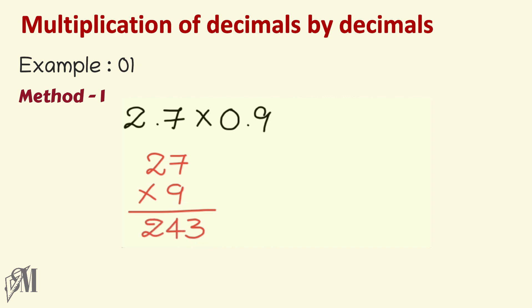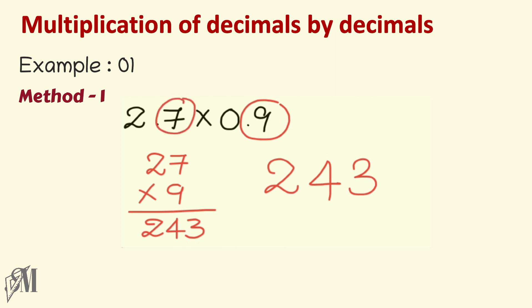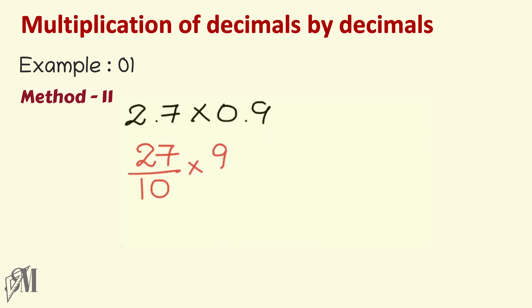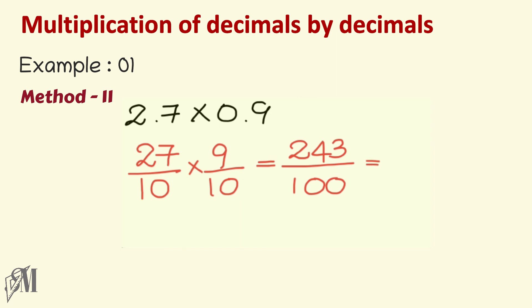243 is not the final answer. Going back to the sum, there are two digits after the decimal points in total — 7 and 9 — so the answer must have two decimal places, giving 2.43. In the second method, we write 2.7 as 27 over 10 and 0.9 as 9 over 10. Multiplying gives 243 over 100, and since the denominator is 100 the answer has two decimal places: 2.43.